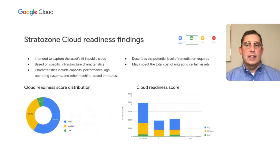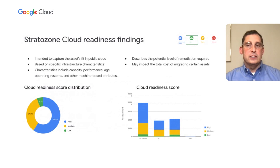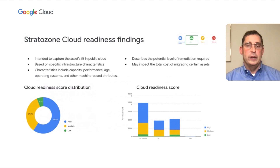With Stratazone's cloud readiness report, you can see which assets are high, medium, and low fit for moving to the cloud. This is based on characteristics such as capacity, performance, age, operating system, and other machine-based attributes.